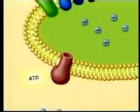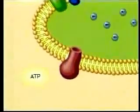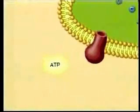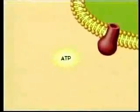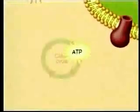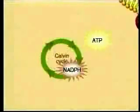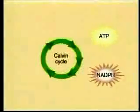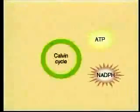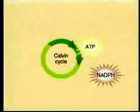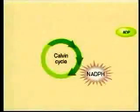The plant cell uses the energy in these compounds during the second phase of photosynthesis, called the Calvin cycle. The Calvin cycle takes place in the fluid stroma surrounding the thylakoids.